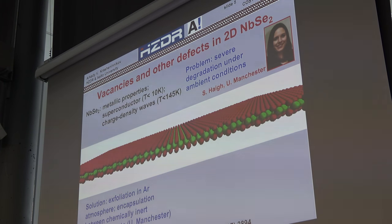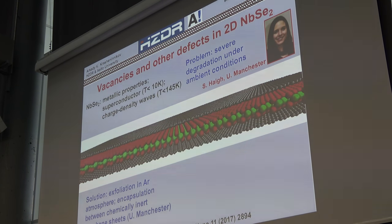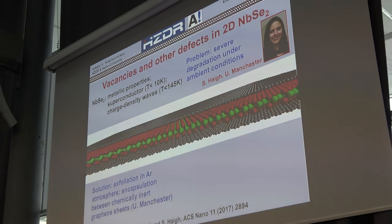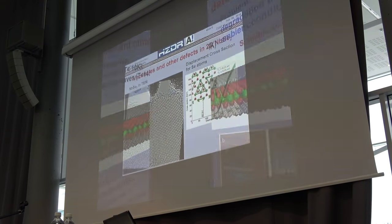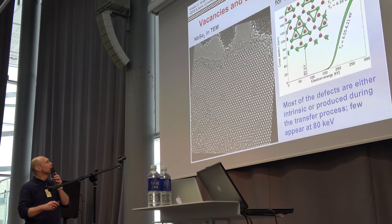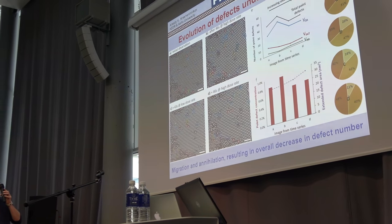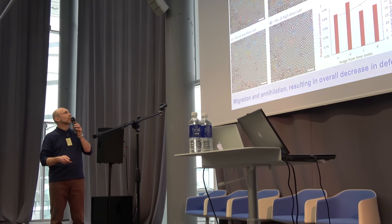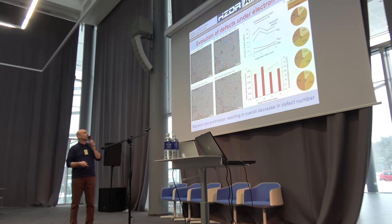One solution is to exfoliate in an argon atmosphere and then put it between graphene sheets. This way we can also minimize the electron damage in the microscope. This is what the sample looks like in reality, and as you can see in this movie, defects are actually moving. If you look at the number of defects, the number doesn't increase with time, so this means that we are successfully protecting the material from the environment.